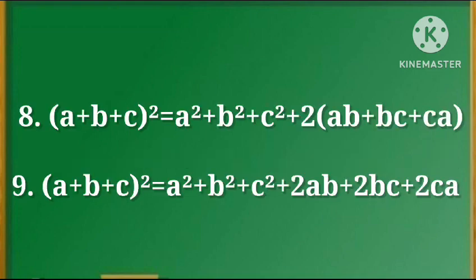8. (a plus b plus c) whole square is equal to a square plus b square plus c square plus 2ab plus 2bc plus 2ca.